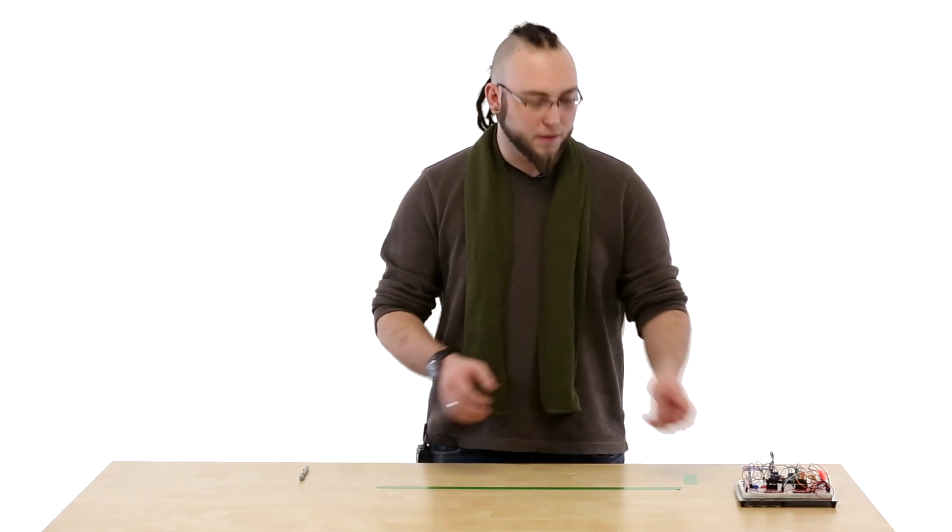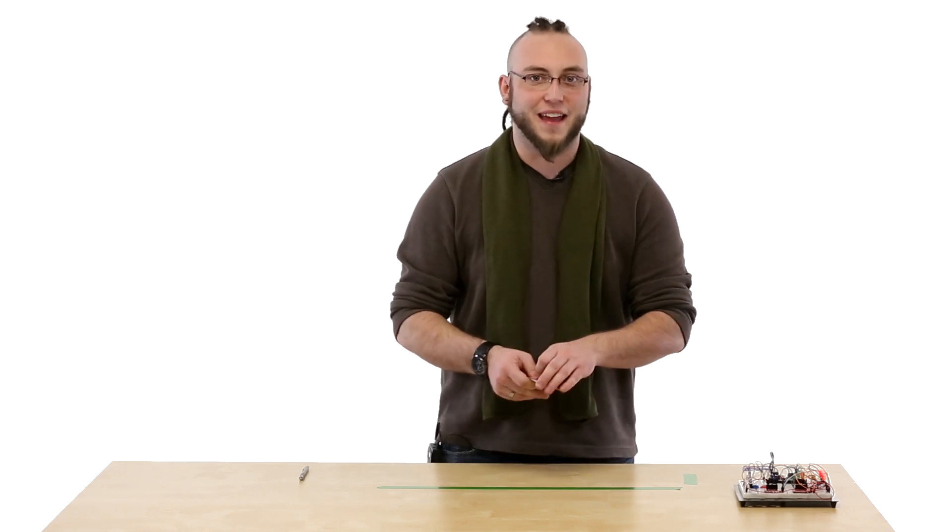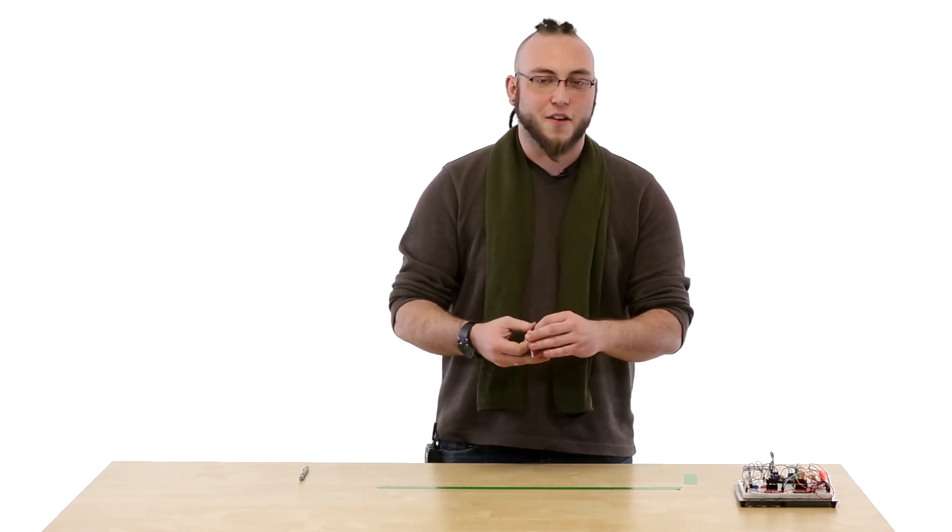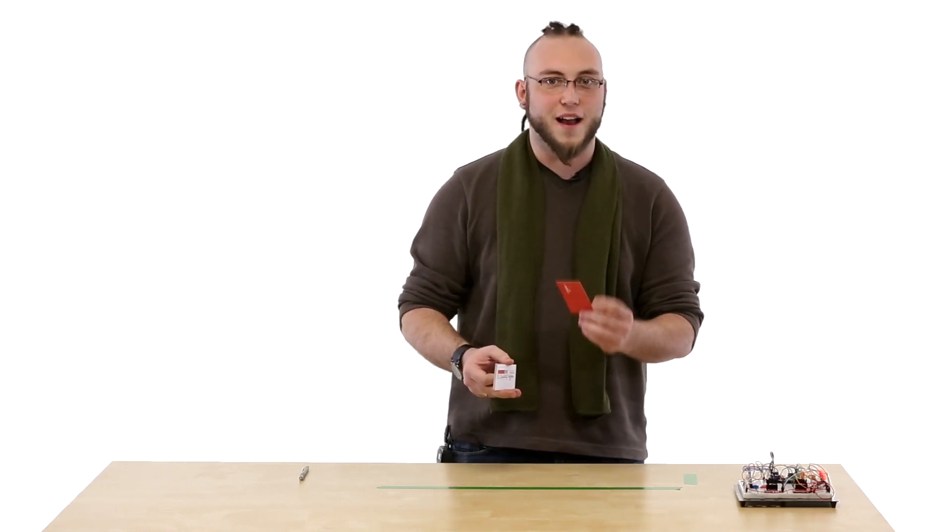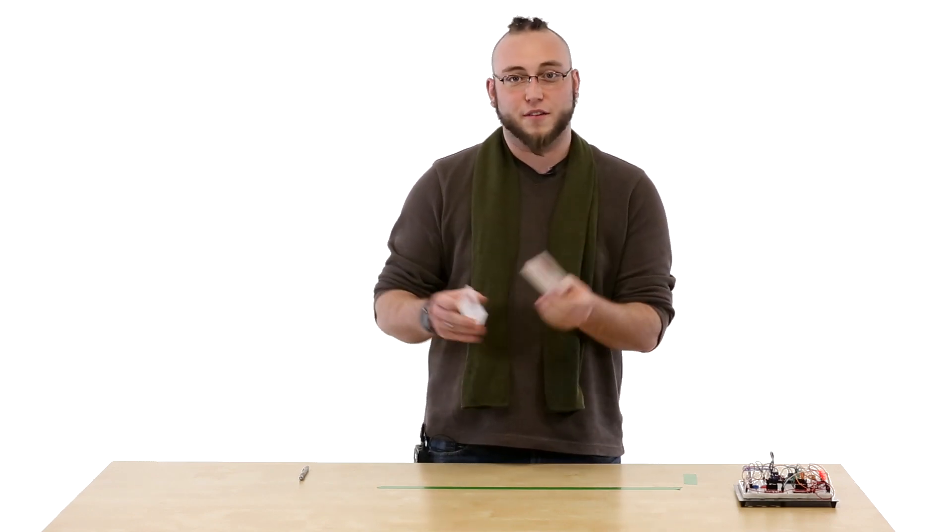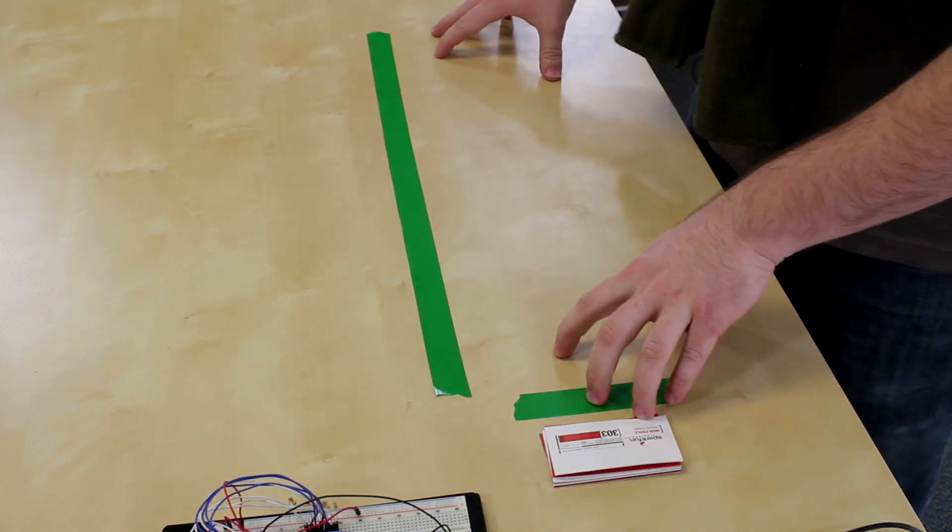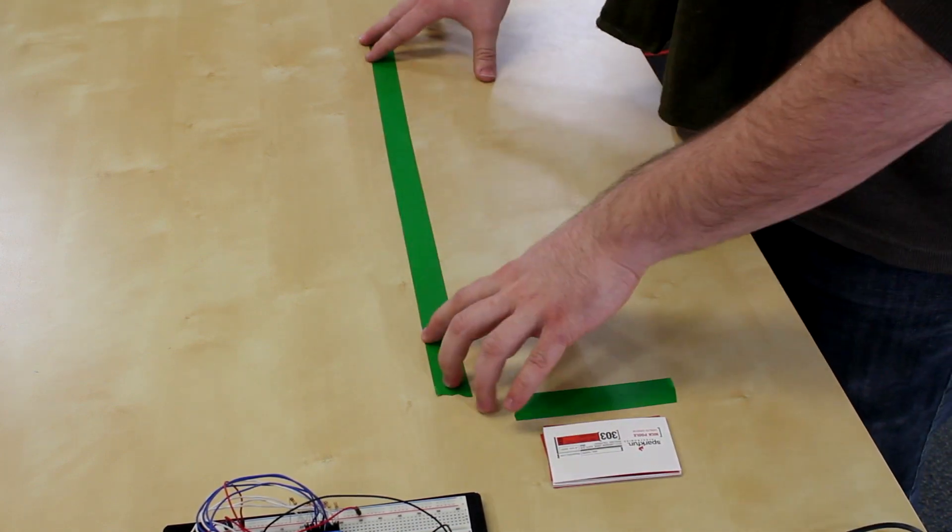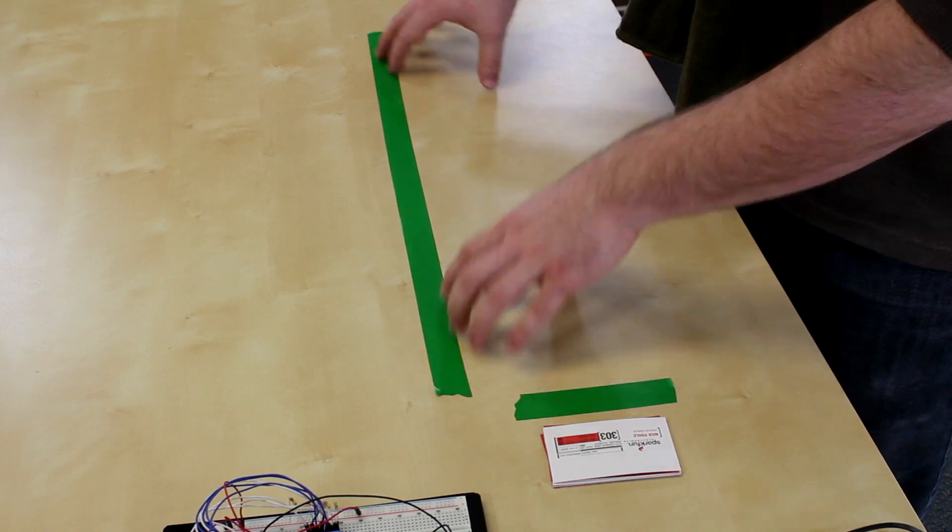Instead of bits, we're going to play with business cards instead. The nice thing about these business cards is that they're red on one side and white on the other, so we can say that red is a one and white is a zero. Here I've actually put some tape on the table so that it represents different parts of the shift register.